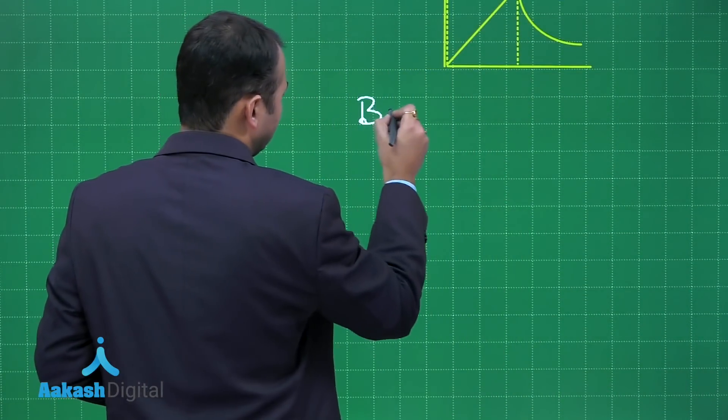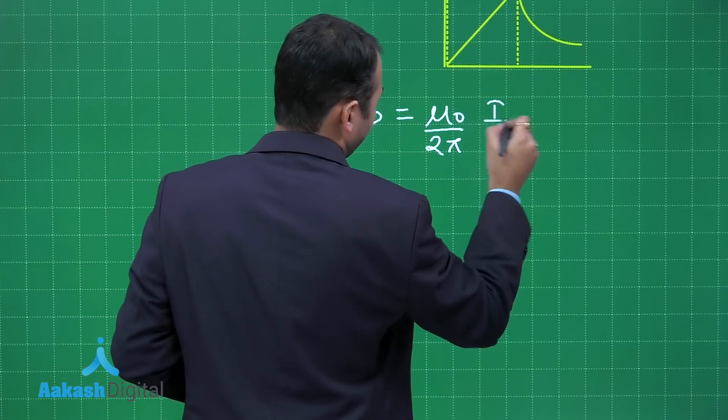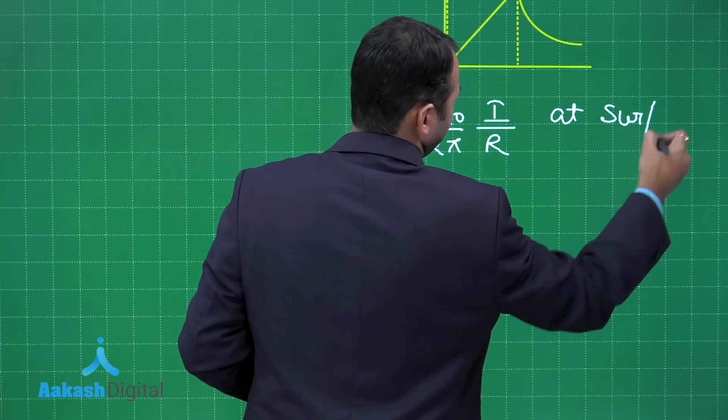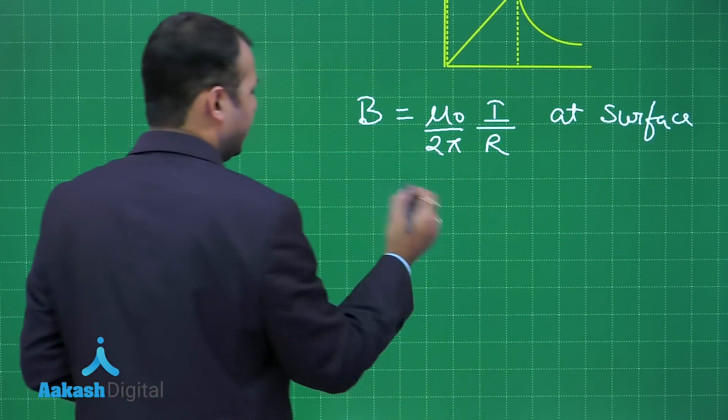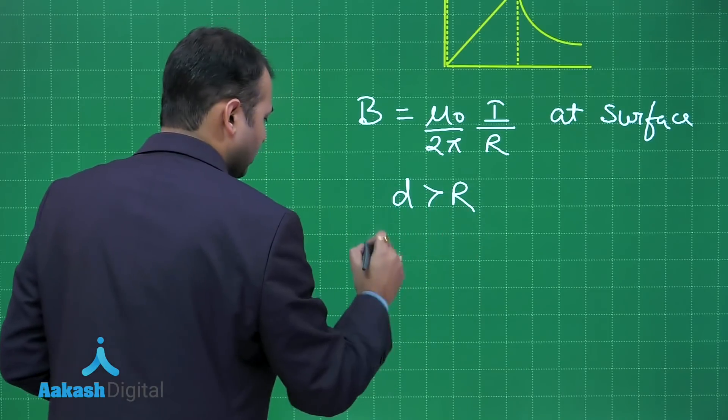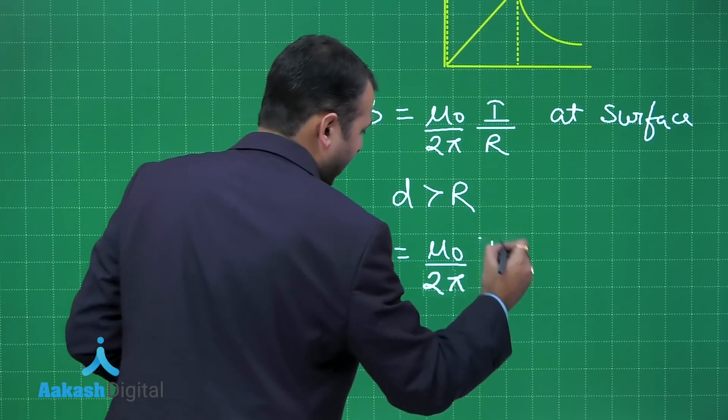you will get B is equal to mu 0 upon 2 pi I by R at surface. And later on when you move away, that is D is greater than R, you will get B as mu 0 upon 2 pi I by D. That means here the case will be hyperbolic.